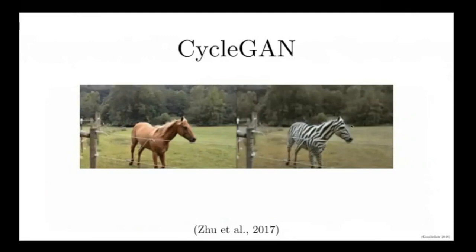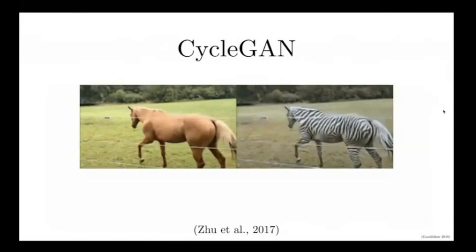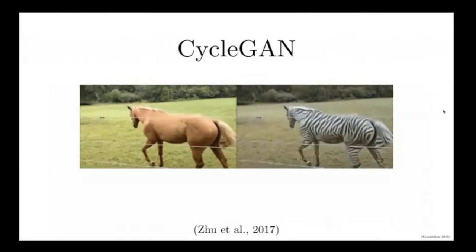One of my favorite examples of an unsupervised image-to-image model is CycleGAN. Here, CycleGAN is able to take a video of a horse and turn it into a zebra. I think it's a really compelling and fun video, and it also shows us a few of the issues that come up in terms of bias and machine learning data sets.